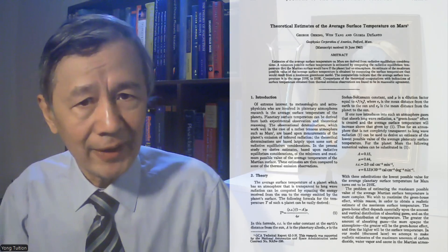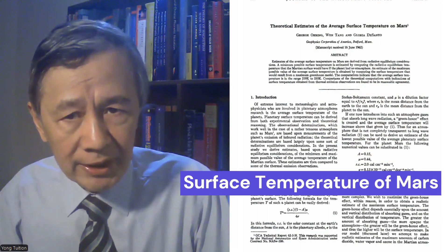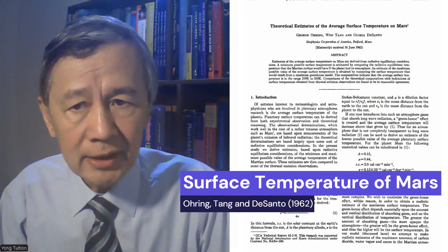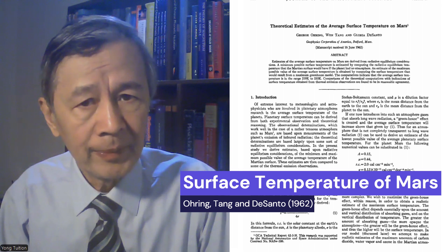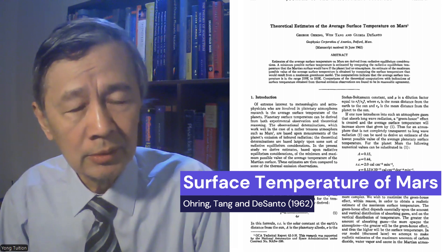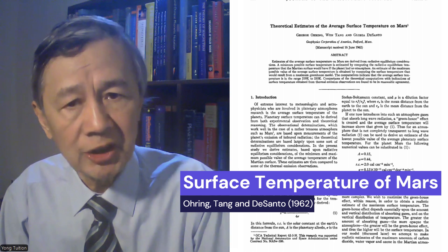As usual, I tried to search for the earliest paper, and then I found this one: Theoretical Estimate of the Mean Surface Temperature of Mars by Orens, Tang, and DeSanto, published in 1962.